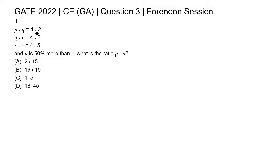If P is to Q equal to 1 is to 2, Q is to R equal to 4 is to 3, R is to S equal to 4 is to 5, and U is 50 percent more than S, what is the ratio P is to U?